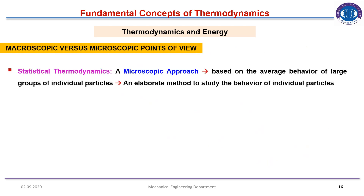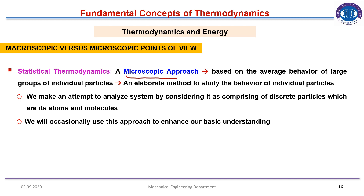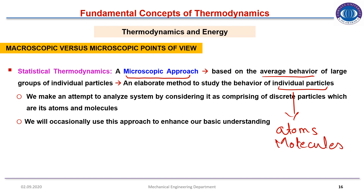Statistical thermodynamics is based on the microscopic approach, based on the average behavior of large groups of individual particles. It elaborates the method of studying the behavior of individual particles — atoms and molecules. We make an attempt to analyze a system by considering it as comprising discrete particles which are its atoms and molecules. We will occasionally use this approach to enhance our basic understanding.